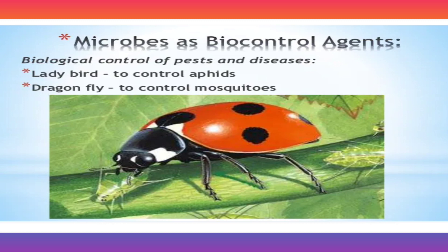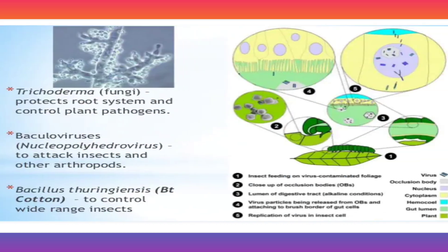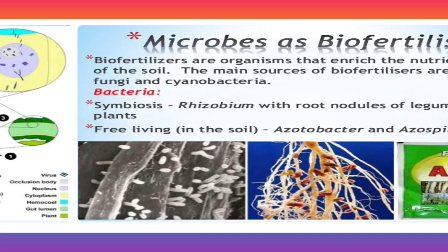Microbes as biocontrol agents — biological control of pests and disease: ladybird is used to control aphids, and dragonfly is used to control mosquitoes. Trichoderma fungi protect the root system and control plant pathogens. Baculovirus — which is a nucleopolyhedrovirus — attacks insects and other arthropods. Bacillus thuringiensis is used to control a wide range of insects.